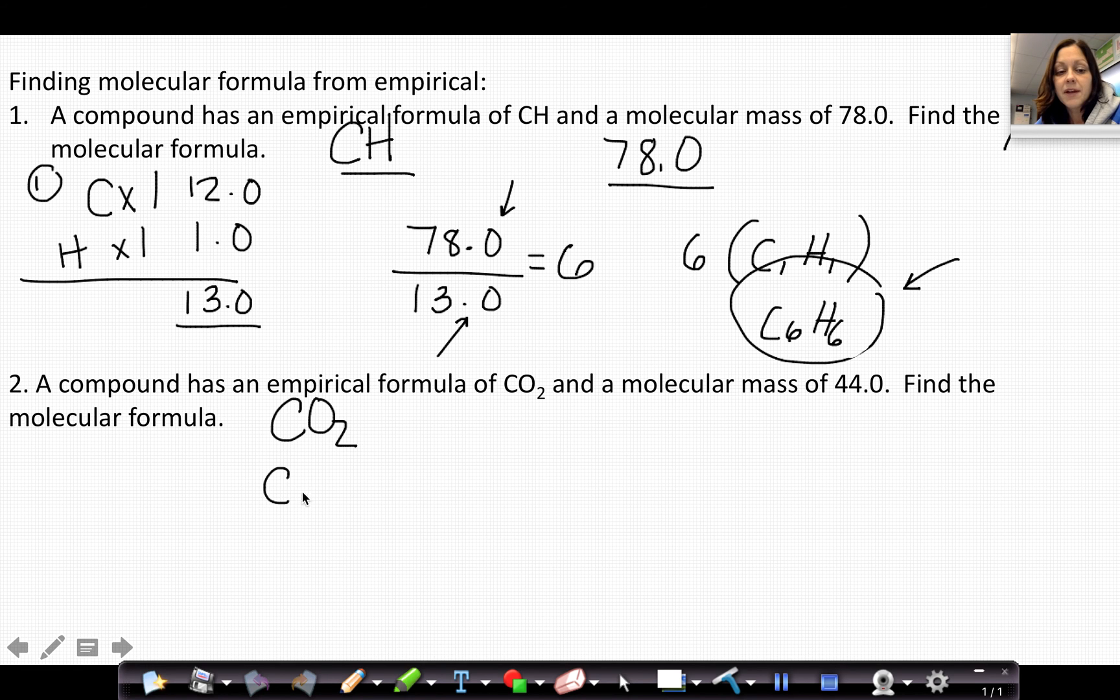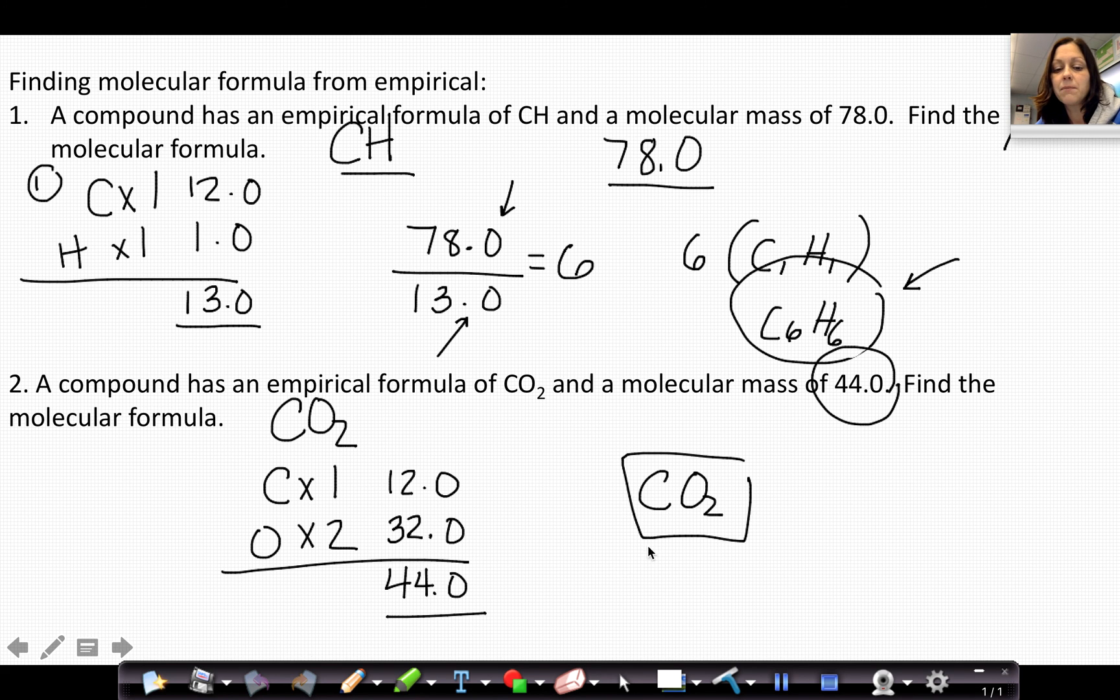We're going to do the same thing. We're going to find the mass of CO2 the same way we did gram formula masses. Remember, in our class we rounded to the nearest tenth. CO2 has a mass of 44, and the molecular mass is 44 as well. So that means that CO2 must be both our empirical and our molecular formula.